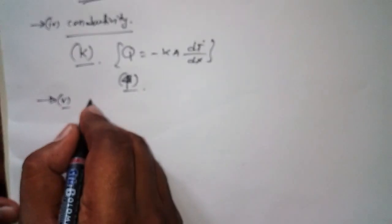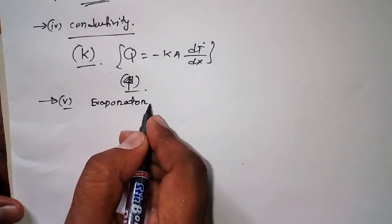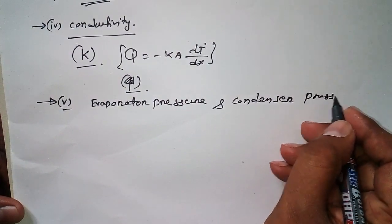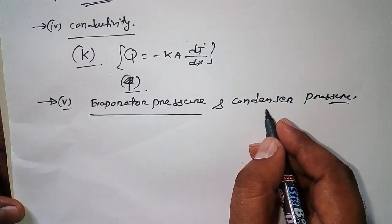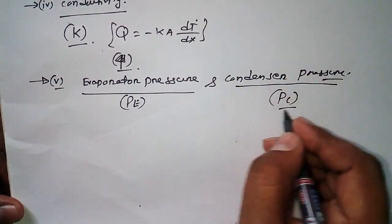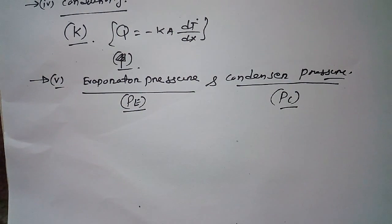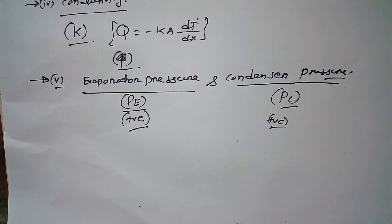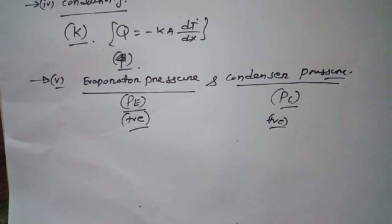The next property is evaporator pressure and condenser pressure. Both the condenser pressure (Pc) and evaporator pressure (Pe) should be positive — that is desirable. The evaporator pressure should be maintained nearly equal to atmospheric pressure, whereas the condenser pressure should have moderate values.